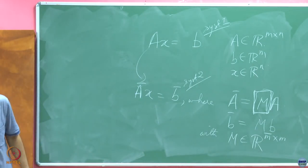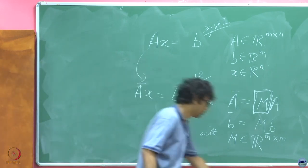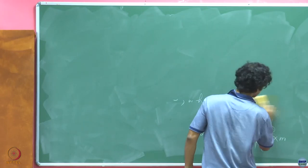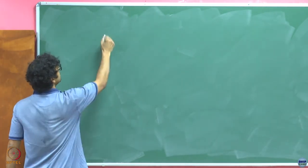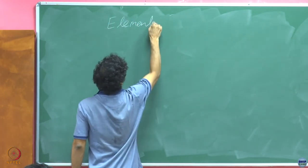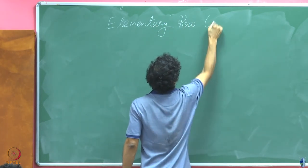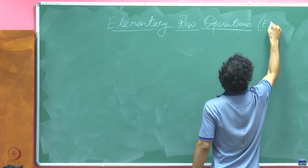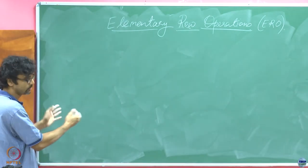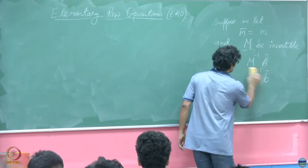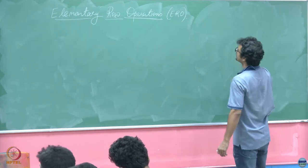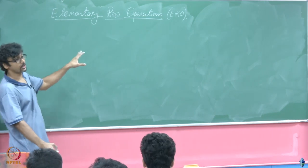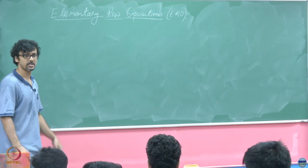Towards this end, we shall now define something called elementary row operations. Because we have now seen that the whole structure is predicated on how the matrices look and what we are doing to these matrices. So, it is perhaps worthwhile to invest our time into understanding what is being done to these matrices or what we can do to these matrices.